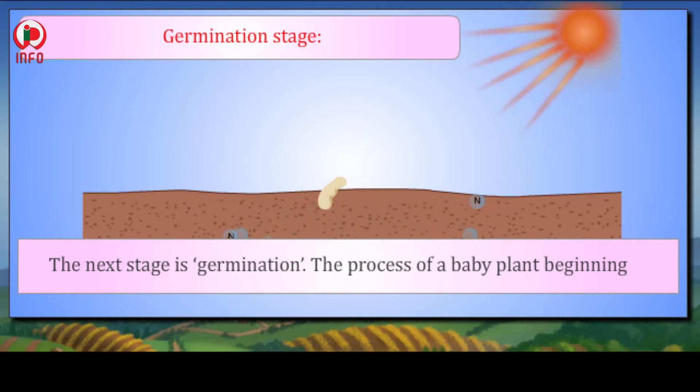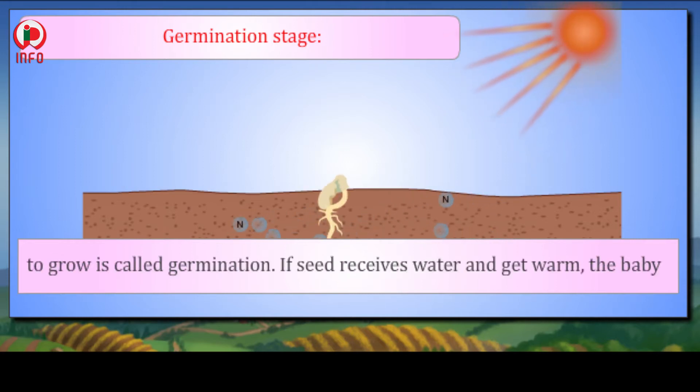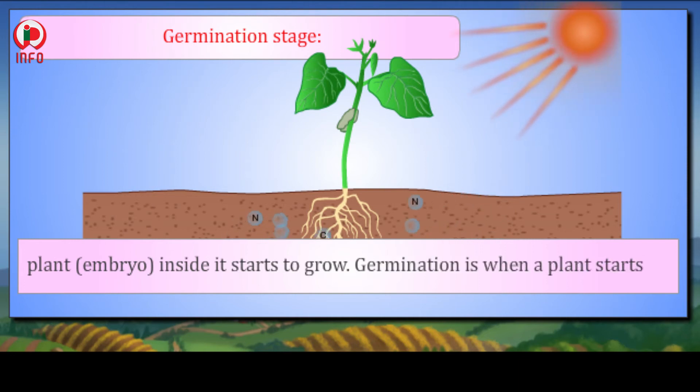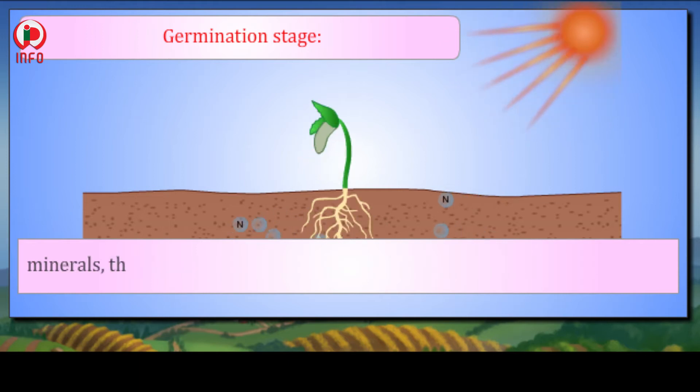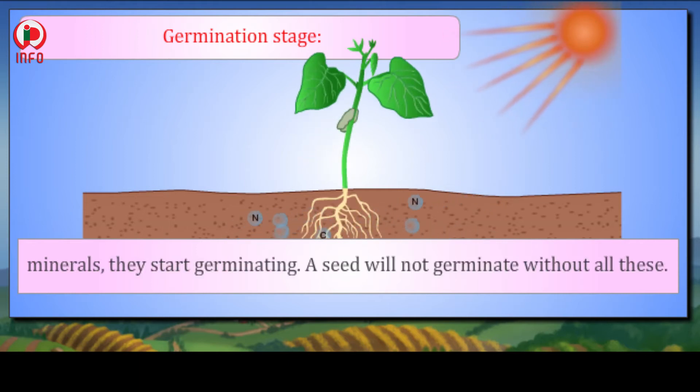Germination stage: The next stage is germination. The process of a baby plant beginning to grow is called germination. If a seed receives water and gets warm, the baby plant inside it starts to grow. Germination is when a plant starts emerging from a seed. When a seed gets proper light, water, warmth, and minerals, it starts germinating. A seed will not germinate without all these.